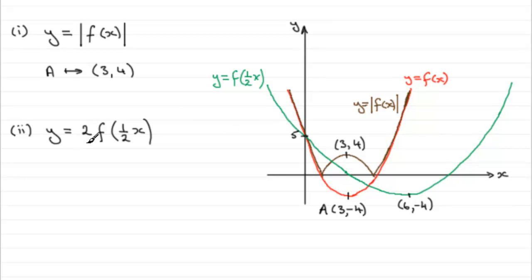Now when we have a 2 now, 2f of a half x, this 2 stretches the green graph of f equals a half x by a scale factor of 2 parallel to the y-axis. And points where it's on the x-axis stay invariant.